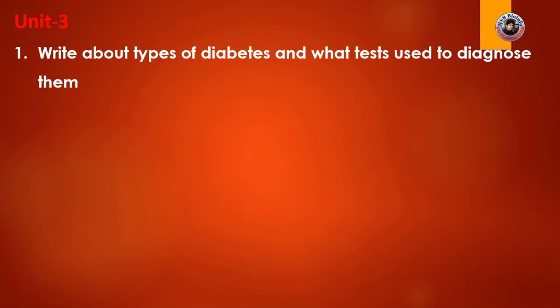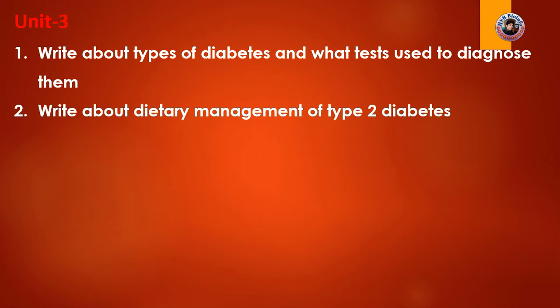Moving to Unit 3, the first question is: write about types of diabetes and what tests are used to diagnose them. Diabetes includes Type 1, Type 2, and gestational diabetes. The diagnostic tests include fasting glucose levels and post-meal glucose levels. The second question covers management of blood sugar through diet — carbs, protein, and other nutrients.